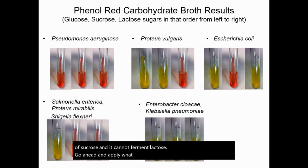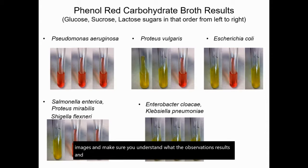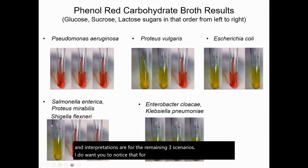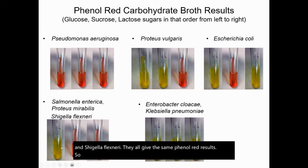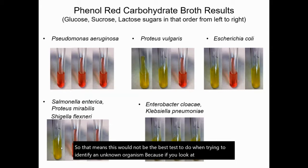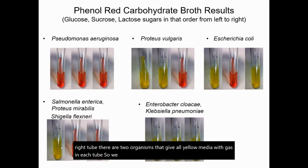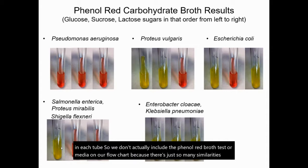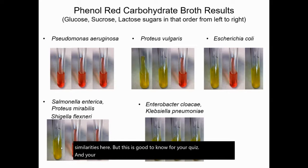Go ahead and apply what we've just been saying to the remaining images and make sure you understand what the observations, results, and interpretations are for the remaining scenarios. I do want you to notice that Salmonella, Proteus mirabilis, and Shigella flexneri all give the same phenol red results. That means this would not be the best test to do when trying to identify an unknown organism, because there are two organisms that give all yellow media with gas in each tube. So we don't actually include the phenol red broth test on our flowchart because there are just so many similarities. But this is good to know for your quiz and your lab exam, and a good one to really practice differentiating observations, results, and interpretations.